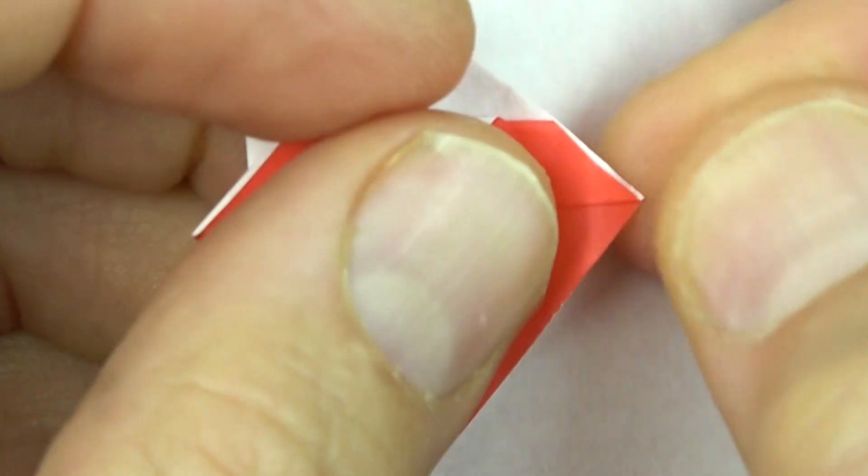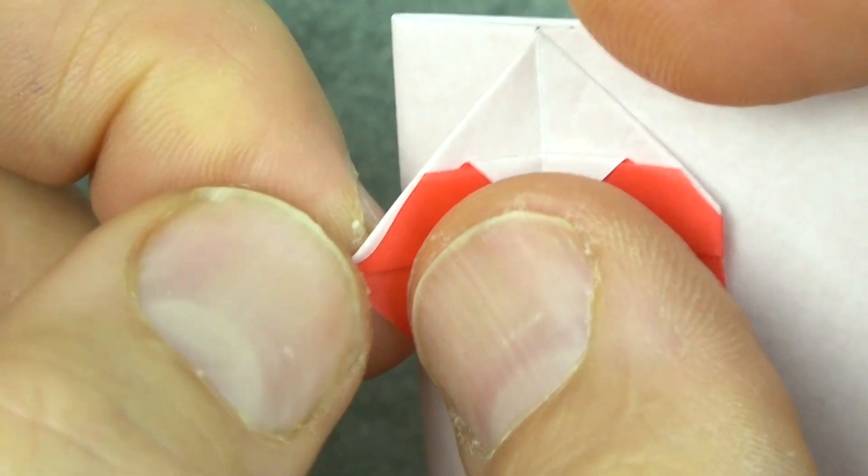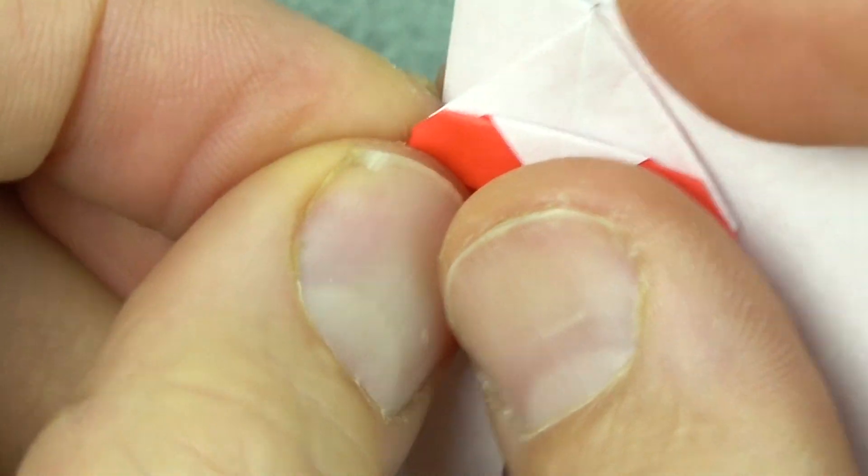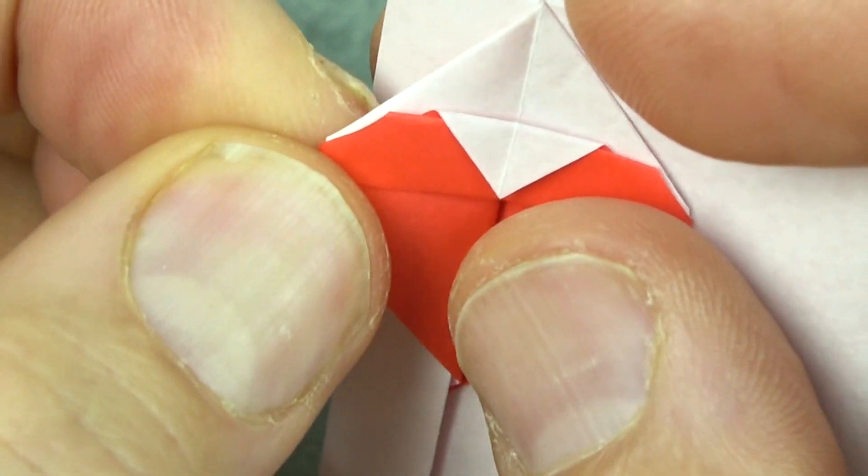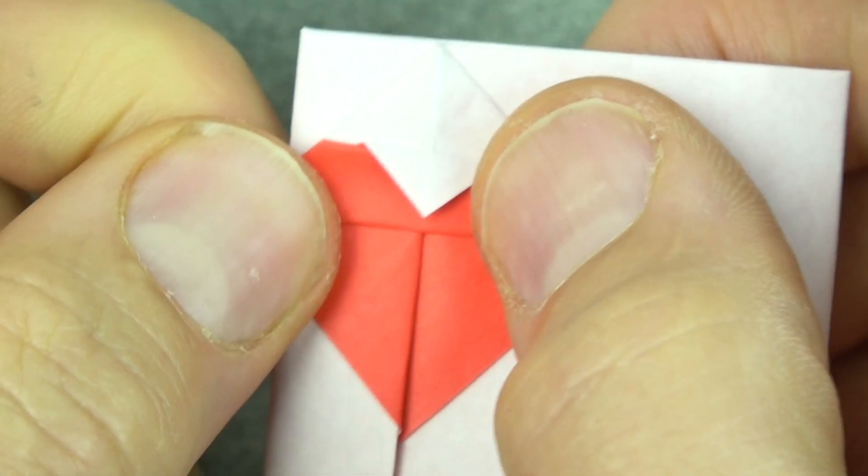And now fold this corner behind and same with this one. And there's the little heart.